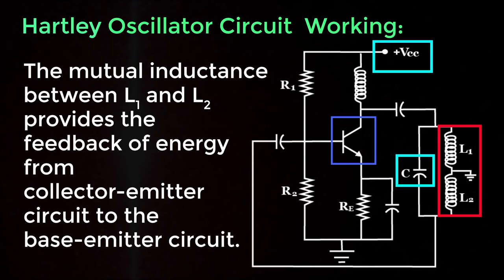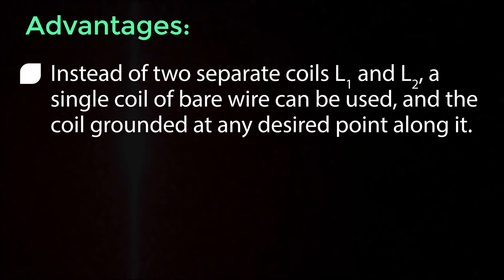Now let's look into the advantages. Instead of two separate coils L1 and L2, a single coil of bare wire can be used and the coil grounded at any desired point along it.